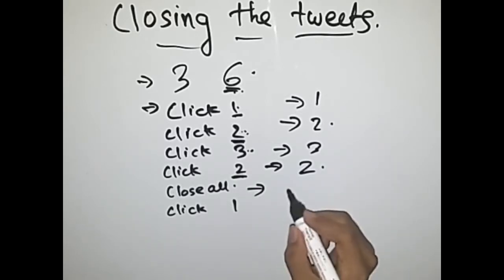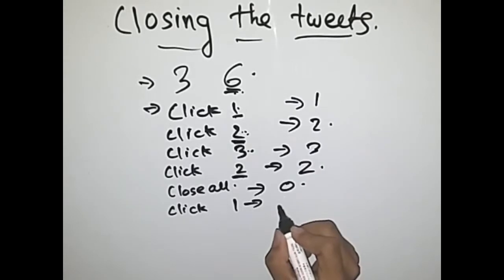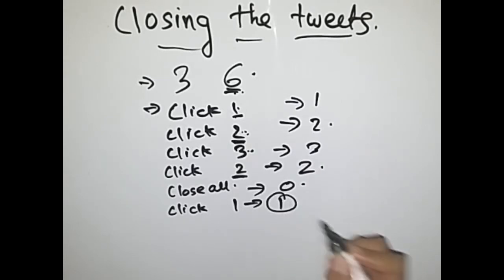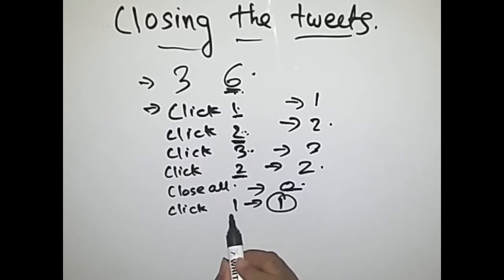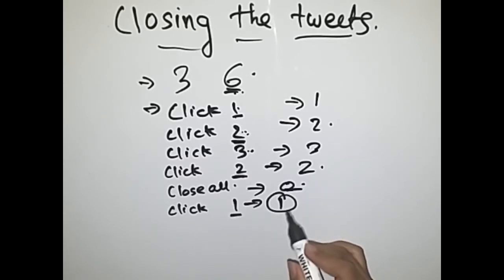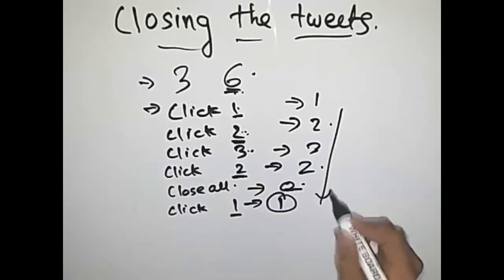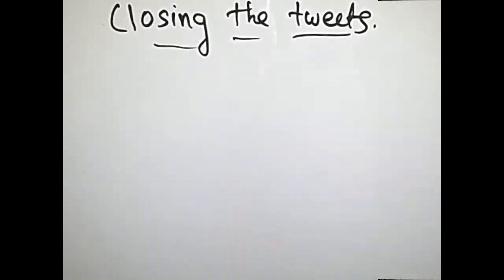After 'close all' the count becomes zero. Then 'click one' means tweet number one gets opened since all tweets are closed. After clicking tweet one it gets opened, so the final count is one. We have to print this. This is quite simple.